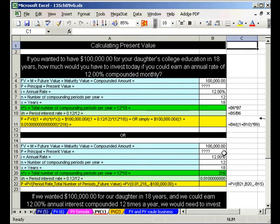We have two examples for present value. If you wanted to have $100,000 for your daughter's education in 18 years, how much would you have to invest today if you could earn an annual rate of 12% compounded monthly? Here's the details. Our future value is what we have this time. But we don't know what our present value is. We don't know what the principal is. Annual rate, 12%, monthly.